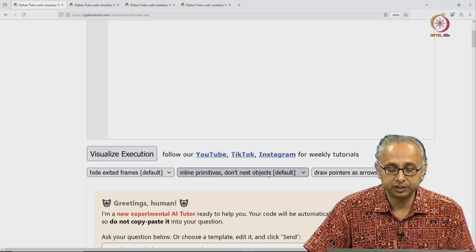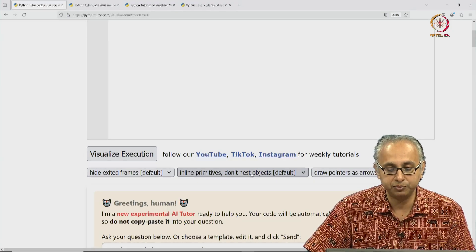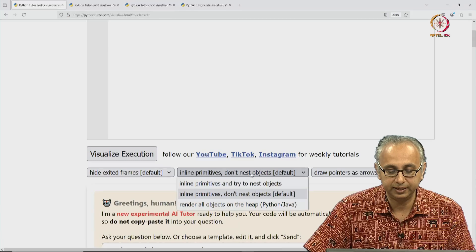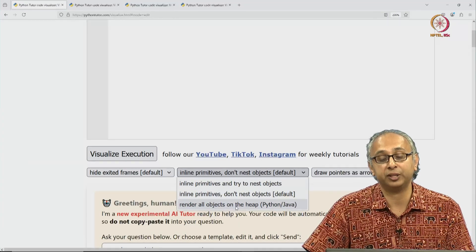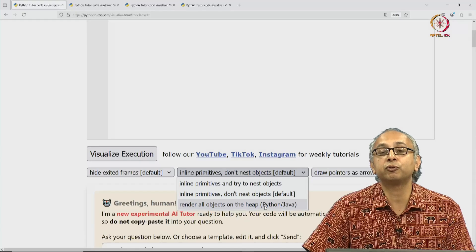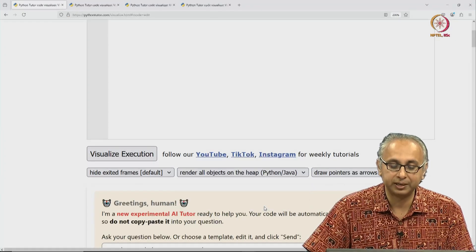One of these options is set to the default value, inline primitives don't nest objects, which is a little hard to understand. I will change this to render all objects on the heap, which is useful for Python and for Java. We're doing Python, so we will click on this.